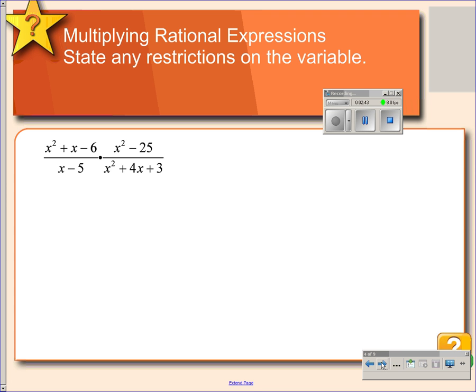Here we are multiplying rational expressions. And to multiply, this is similar to when you multiply fractions, you want to do some canceling, if at all possible. So rather than foiling these numerators together, we will factor and cancel and then multiply whatever's left. So this expression will factor as x plus 3 and x minus 2.